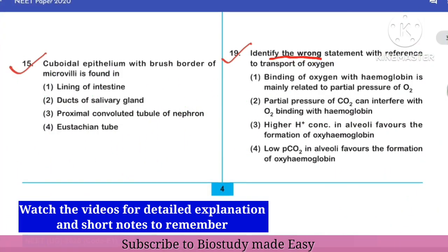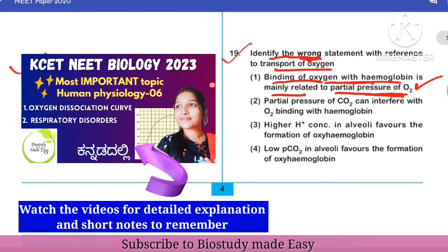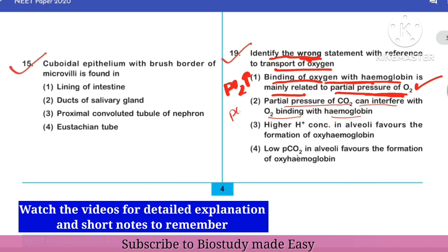The question is: identify the wrong statement related to transport of oxygen. Binding of oxygen with hemoglobin is mainly related to partial pressure of oxygen — if partial pressure of oxygen is high, oxygen binds with hemoglobin. Next, partial pressure of carbon dioxide interferes with oxygen binding — if CO2 is high, oxygen cannot bind; instead CO2 binds with hemoglobin.